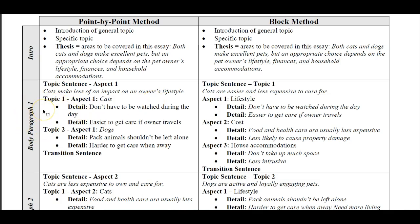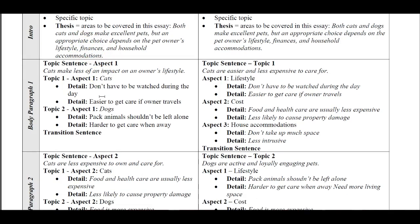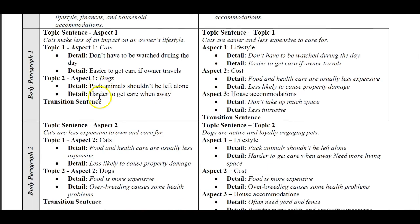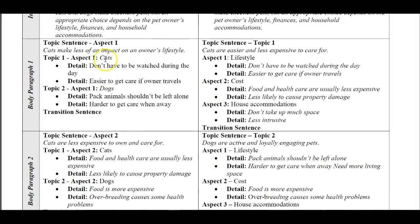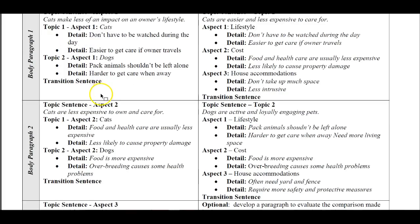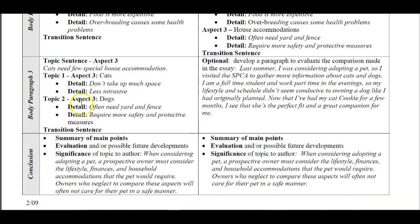So this was the first body paragraph. The second body paragraph is going to be about finances — we're going to talk about the finances of both cats and dogs. And then the last one was household accommodations: body paragraph three would be about household accommodations between cats and dogs.